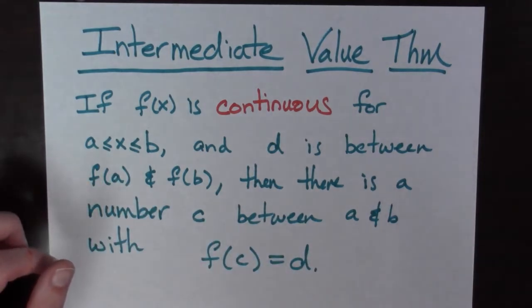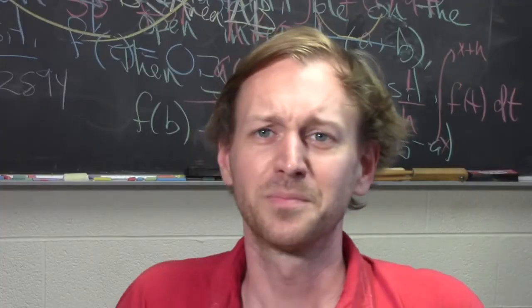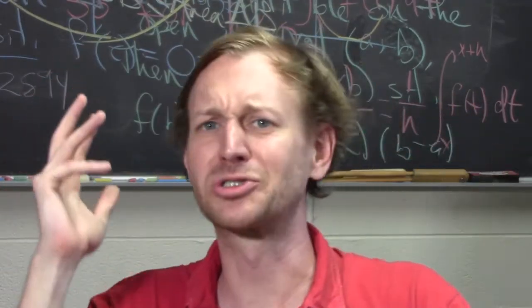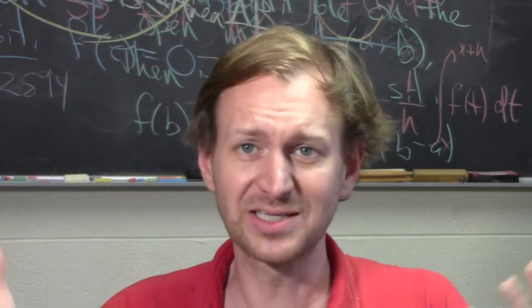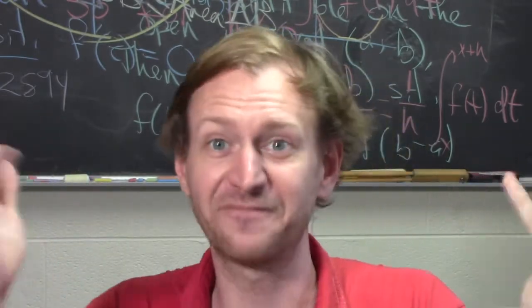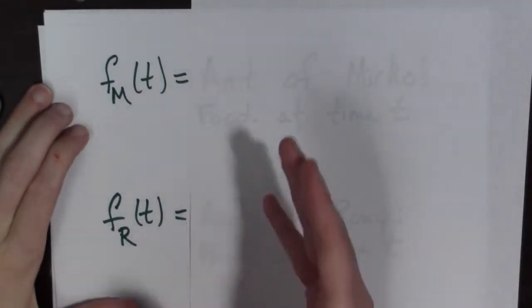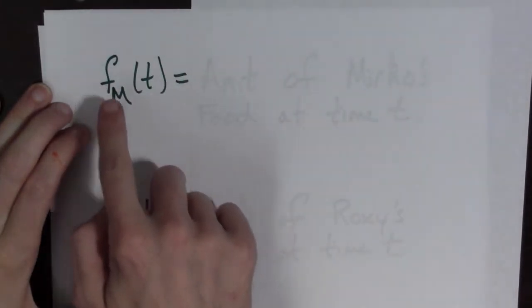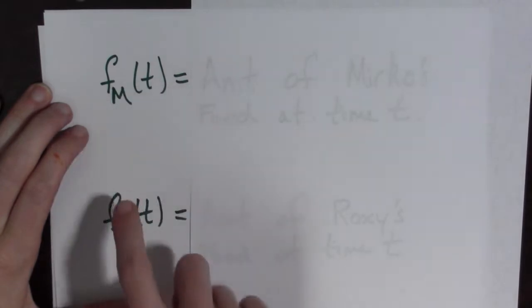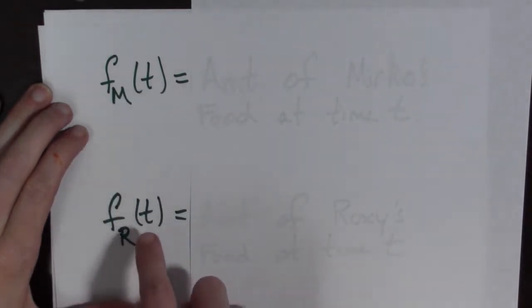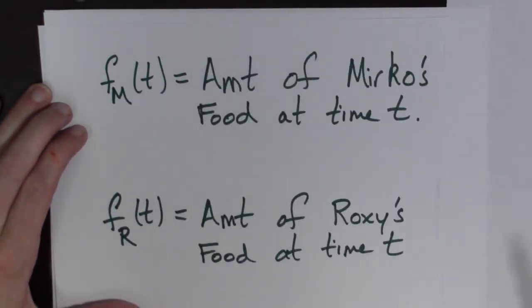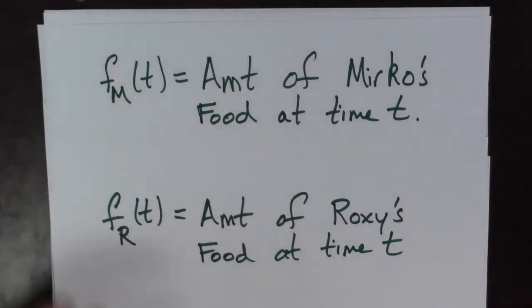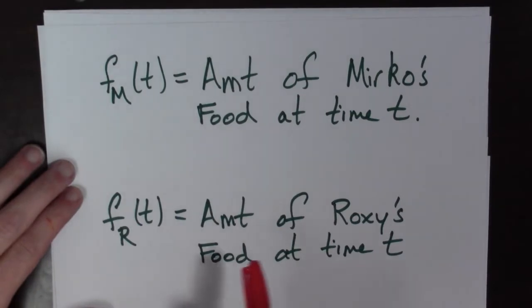But how does this abstract theorem help us solve this problem about cats and cat food? Well, to get us started we need some functions. We're going to have two functions: f_m(t) and f_r(t). Now f_m is the amount of Medical's food left at time t, and f_r is the amount of Roxy's food left at time t.